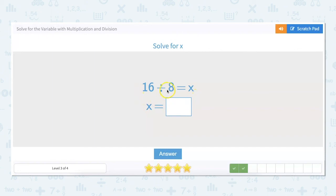16 divided by 8 equals x. So I'm going to use my fact family strategy for this one. What would I multiply 8 by to get to 16? And I know that answer is 2. So 2 times 8 equals 16. So that means 16 divided by 8 equals 2.